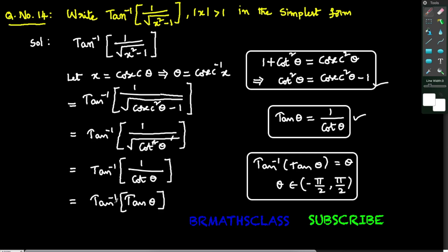This expression is of the form tan inverse of tan theta, so tan inverse of tan theta equals theta. As we took x equal to cosecant theta, theta equals cosecant inverse x. Therefore, in place of theta we write cosecant inverse x.